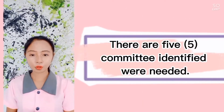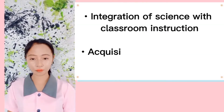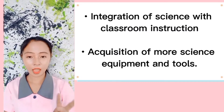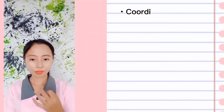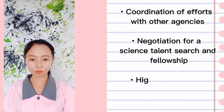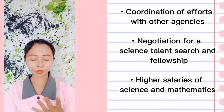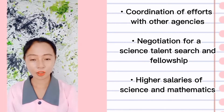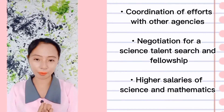There were five areas the committee identified where improvement was needed. First, integration of science with classroom instruction. Second, acquisition of more science equipment and tools. Third, coordination of efforts with other agencies. Fourth, negotiation for a science talent search and fellowship. And lastly, higher salaries for science and mathematics teachers.